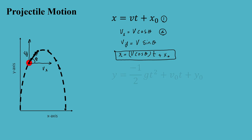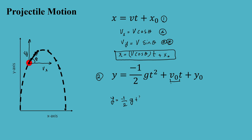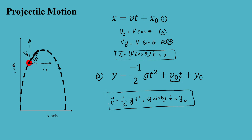For the y-axis, the equation of motion is: y equals negative one-half g t squared plus v sine theta times t plus y-naught. Substituting vy equals v sine theta gives this final equation of motion in y.